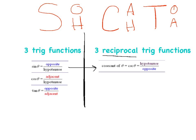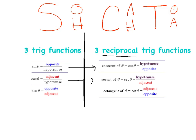Sine is opposite over hypotenuse, and if you flip that upside down you get hypotenuse over opposite — that's cosecant. Reciprocal simply means flipping the fraction. The next reciprocal trig function is secant, abbreviated SEC, which is the reciprocal of cosine. Cosine is adjacent over hypotenuse, so secant is hypotenuse over adjacent.